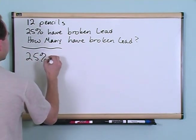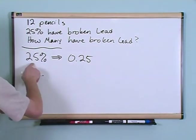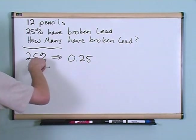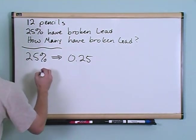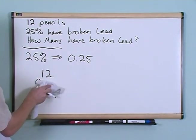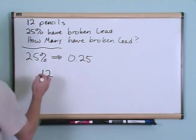25% is the same thing as 0.25 and we just learned that before because you just take that decimal point here, move it two points to the right or you could start here and two points to the left. That's how you convert to decimal. And since we started with 12 pencils to begin with, we're just going to multiply by our percentage, which we're going to multiply by the 0.25.